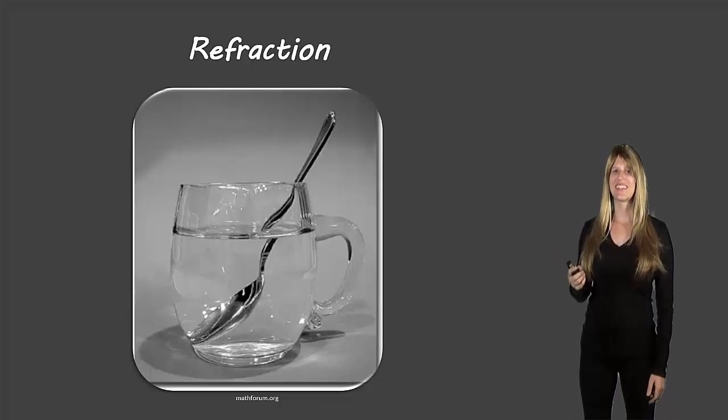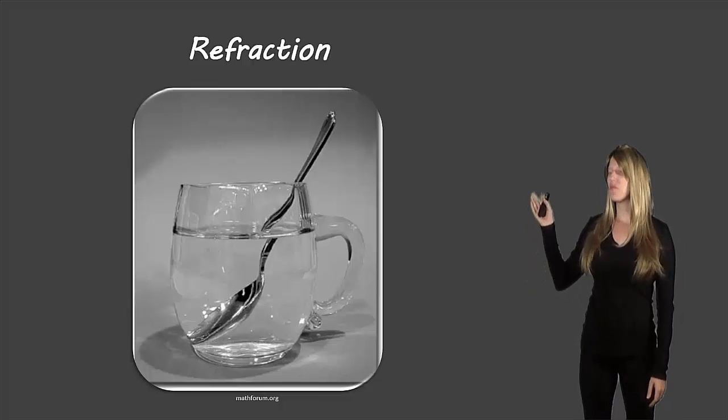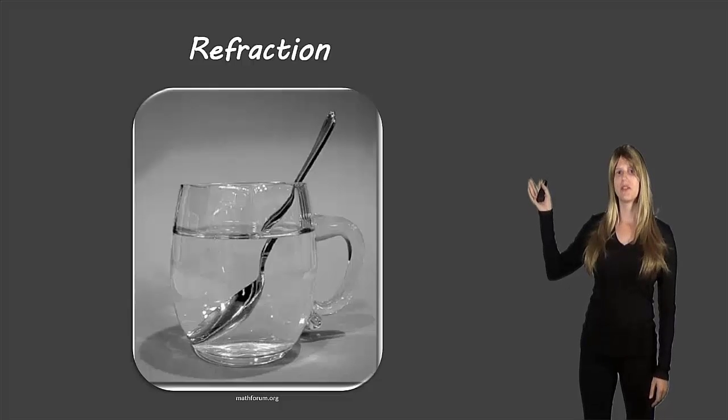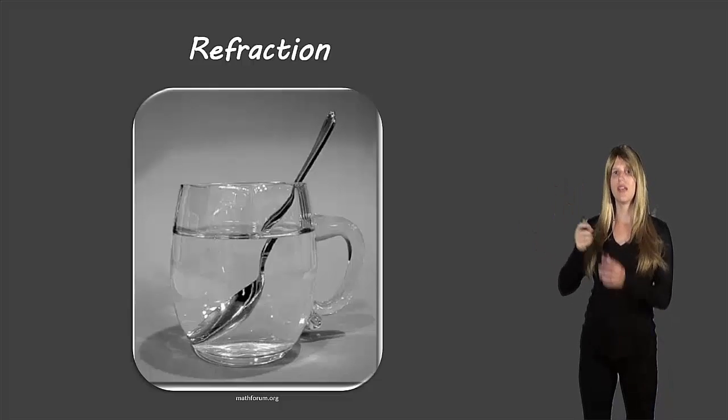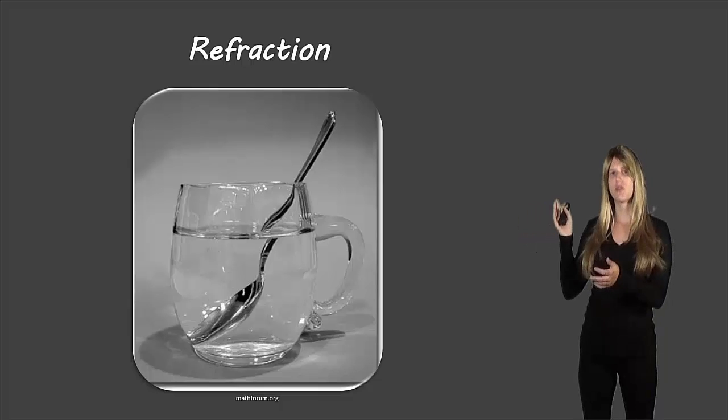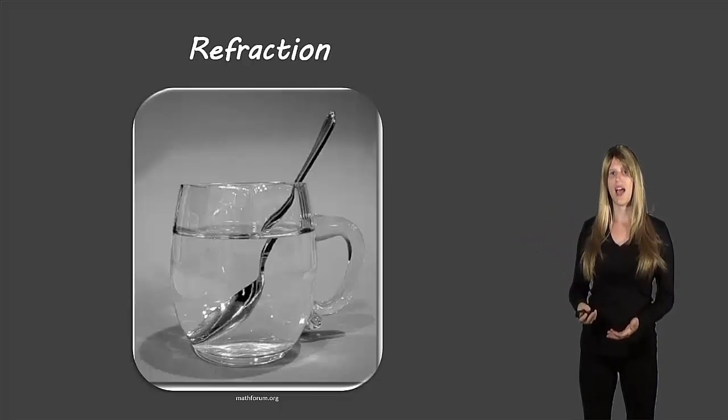This picture here is a fantastic example of refraction and you may have seen this before. If you put a spoon in a glass of clear liquid, you'll be able to see that the spoon almost seems to start and then bend halfway through and then continue. But if you pull the spoon out, it's in one straight line. So why is it that the spoon seems to bend and look crooked? Well, that has to do with refraction.